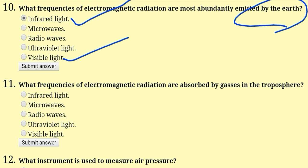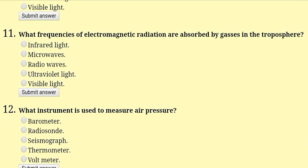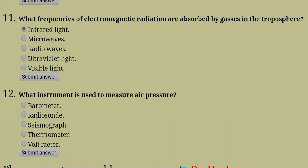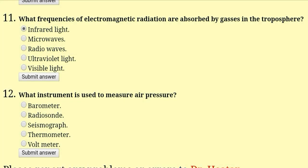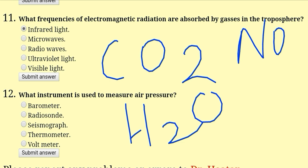What frequencies of electromagnetic radiation are absorbed by gases in the troposphere? The right answer is infrared. Infrared light is absorbed by water vapor, carbon dioxide, and nitrous oxide present in the troposphere. Due to this absorption, the greenhouse effect occurs.